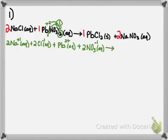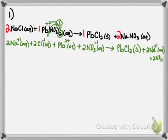Next we go to the product side. Remember, lead chloride is a solid, and solids do not dissolve in water — they're insoluble — so we're not going to break up PbCl₂; we leave that alone. The only thing left to break up is NaNO₃. We have 2 Na's each with a plus 1 charge, and 2 NO₃'s each with a minus 1 charge. That is our complete ionic equation: everything aqueous was broken down into its ions, and anything that was a solid was left alone.